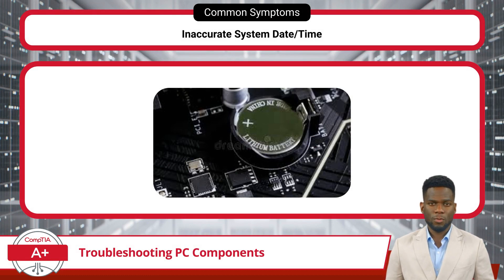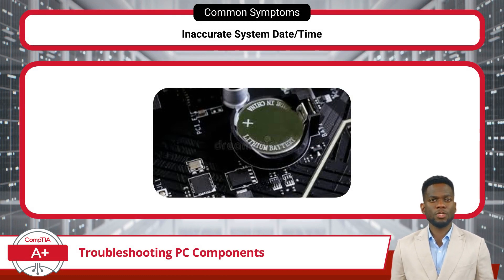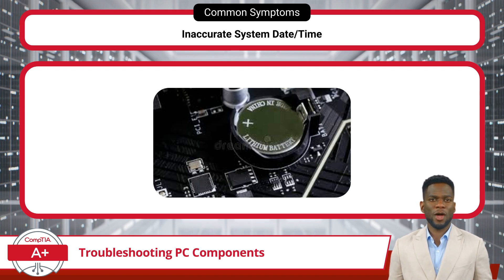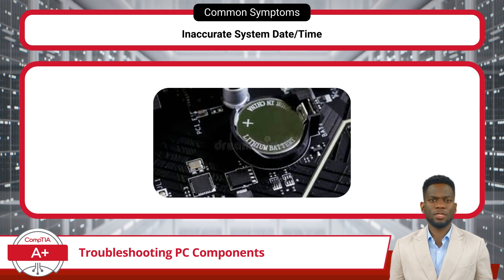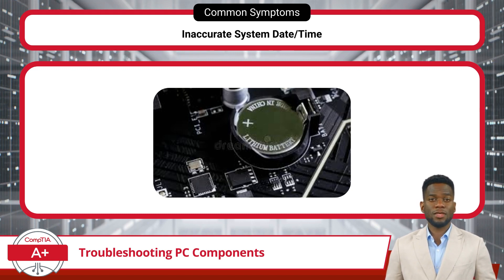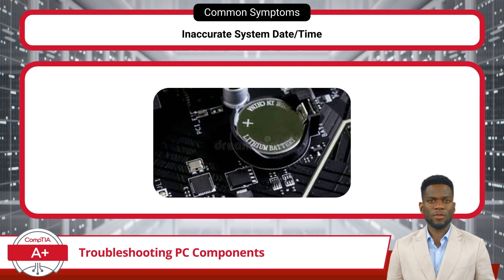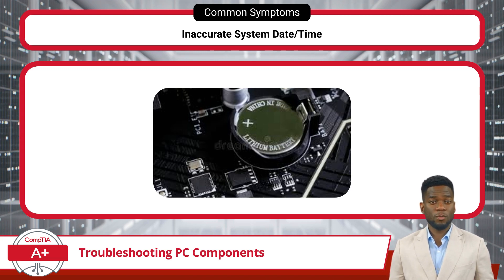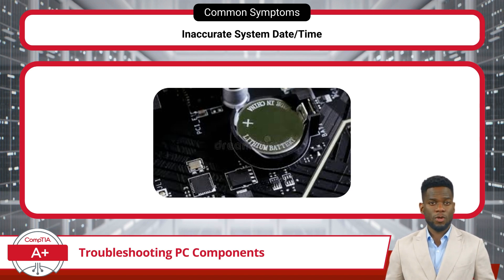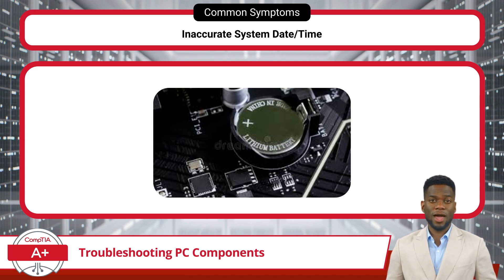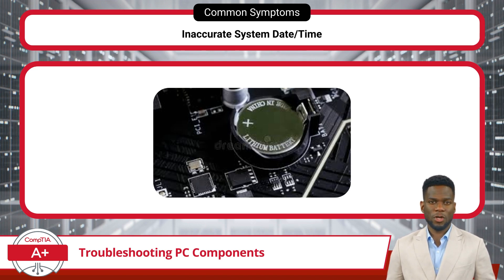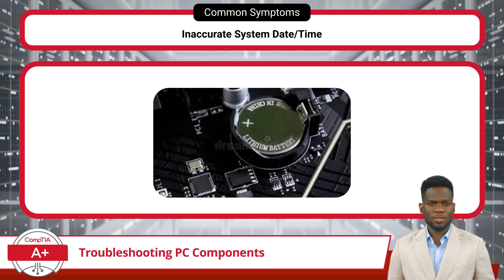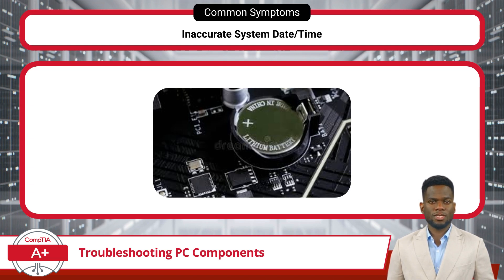Lastly, the CMOS is a component within a computer system that aids in preserving BIOS settings, including system date, time, and hardware configuration details. The CMOS is essentially a small onboard battery used to retain these settings even when the computer is powered off. Inaccurate system date and time settings can often be attributed to issues with the CMOS battery, which provides backup power to maintain these settings when the main power source is disconnected. Over time, this battery may degrade or lose its charge, leading to inaccuracies that can affect file timestamping, software licensing, and scheduled tasks.